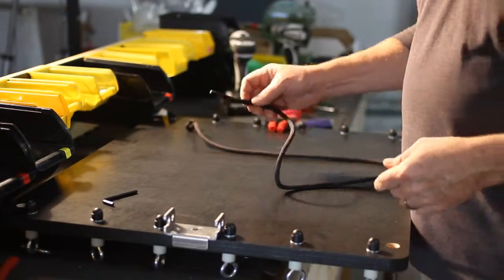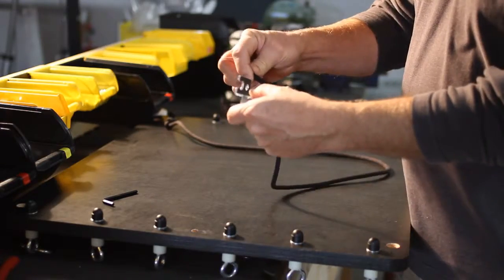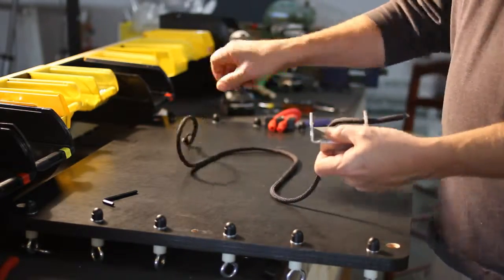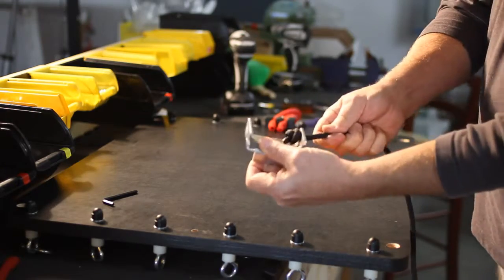Now before we put the bolt in and tighten it up, we're going to put the arrester ropes in that come with it. So the knotted end will be pulled through here and pull up like so.